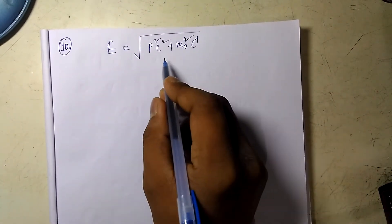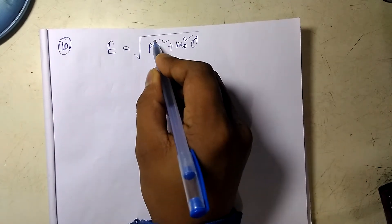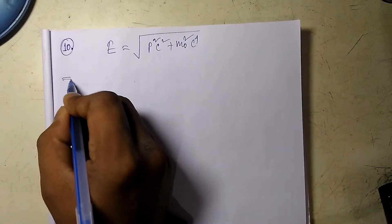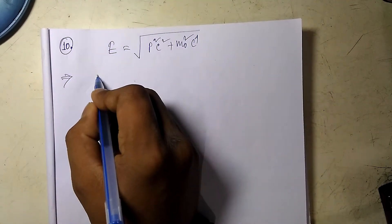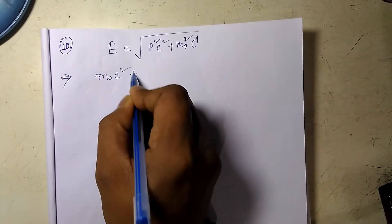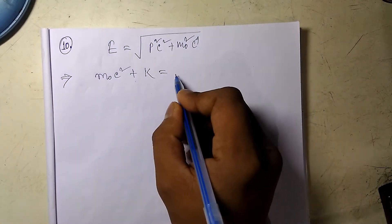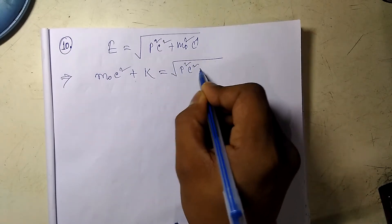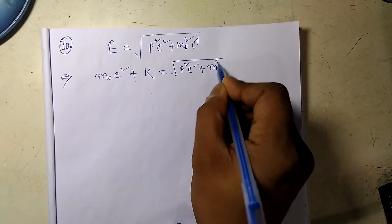Here I am using m₀; in the book they're using m. We know E is the sum of rest mass energy plus kinetic energy, which would be the square root of p²c² plus m₀²c⁴.